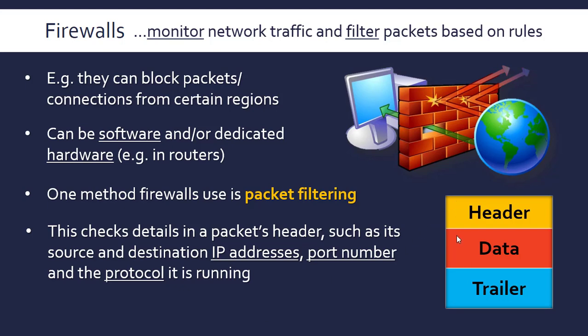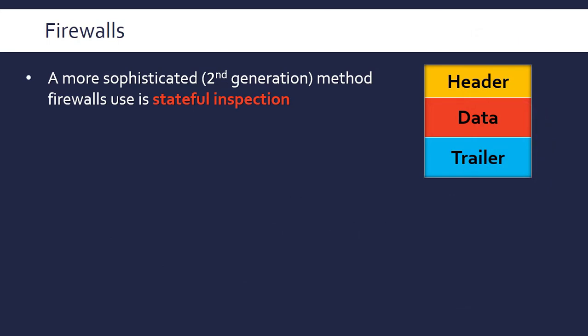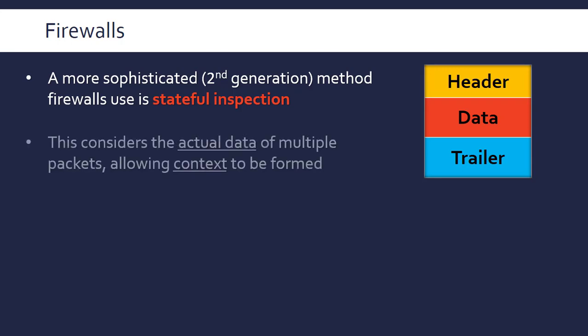The second method is stateful inspection, a slightly more advanced and sophisticated method developed later than packet filtering. This looks at the actual data, and especially at the data of multiple packets. Before, we were just looking at a single packet and either accepting or rejecting it — here we're looking at slightly more context.